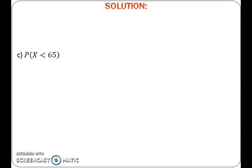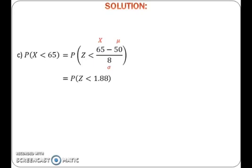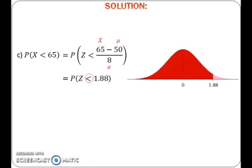To find probability of x less than 65, first change normal distribution to standard normal distribution by using formula x minus mu over sigma. Here we get probability of x less than 65 equals to probability of z less than 1.88. After that, draw a bell-shaped graph with zero at the center. Plot 1.88 on the graph, draw a vertical line and shade the region of probability that we want to find. Because we want to find probability of z less than 1.88, the region would be to the left of 1.88.